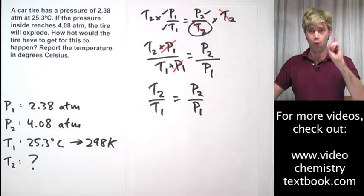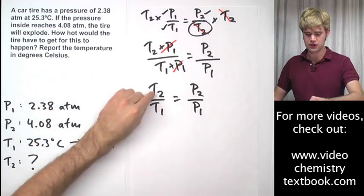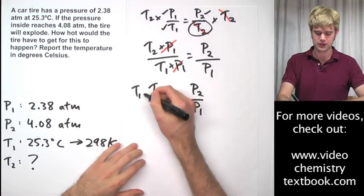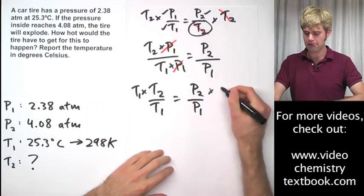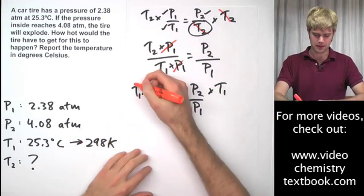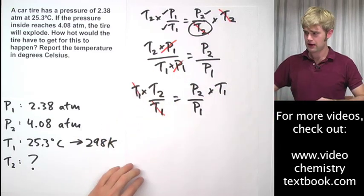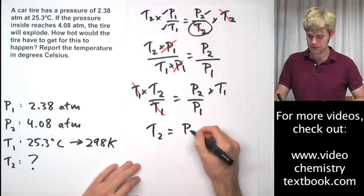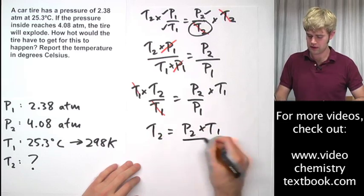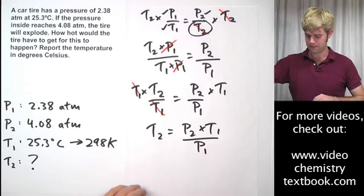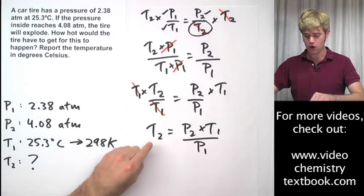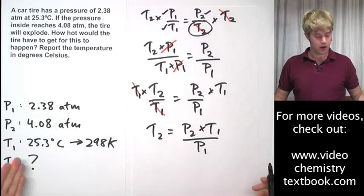We're almost there. One more step to get T2 by itself, got to get this T1 out of the bottom here so I'll multiply both sides, T1 over T1 times this, T1 on the top, T1 on the bottom, they cancel out and I'm left with T2 equals P2 times T1 divided by P1. There we go. All right. Now we're ready to plug our numbers in here.